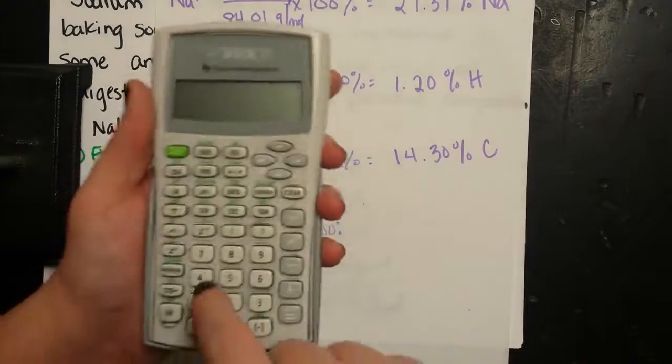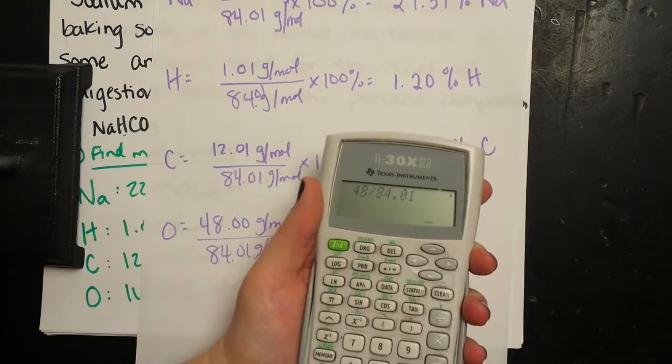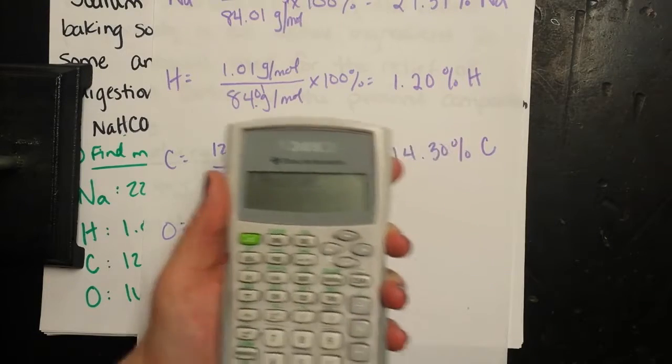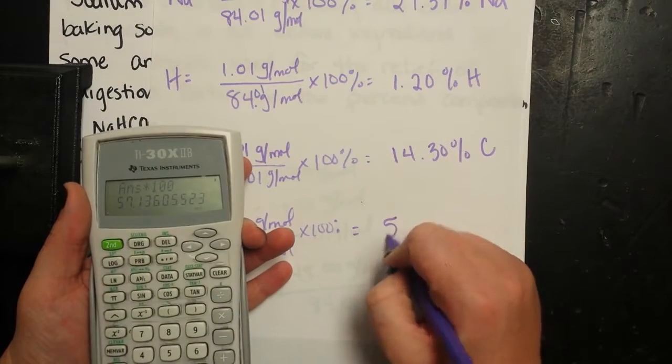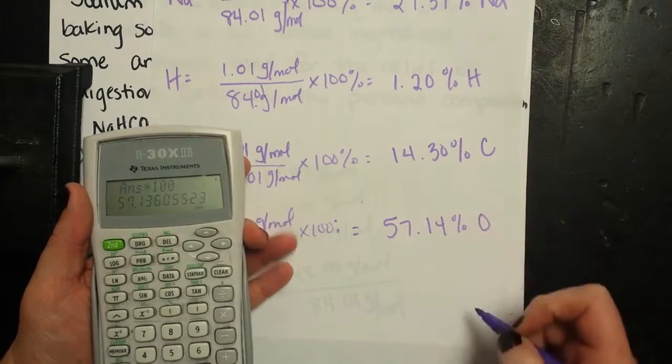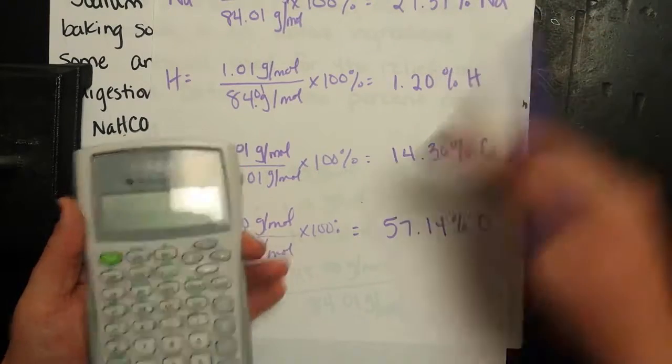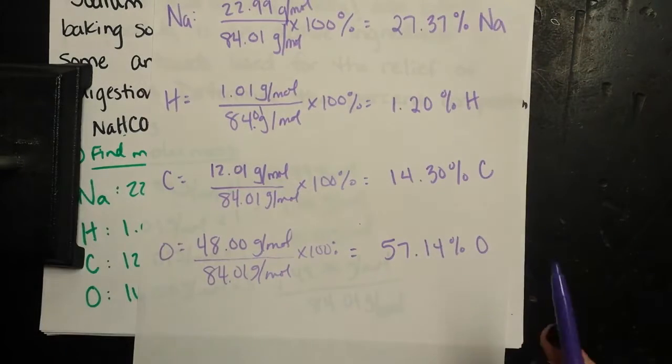And then oxygen, so it contributes 48 divided by 84 times 100, contributes 57.14% oxygen. So this is the percent by mass of each element within sodium bicarbonate.